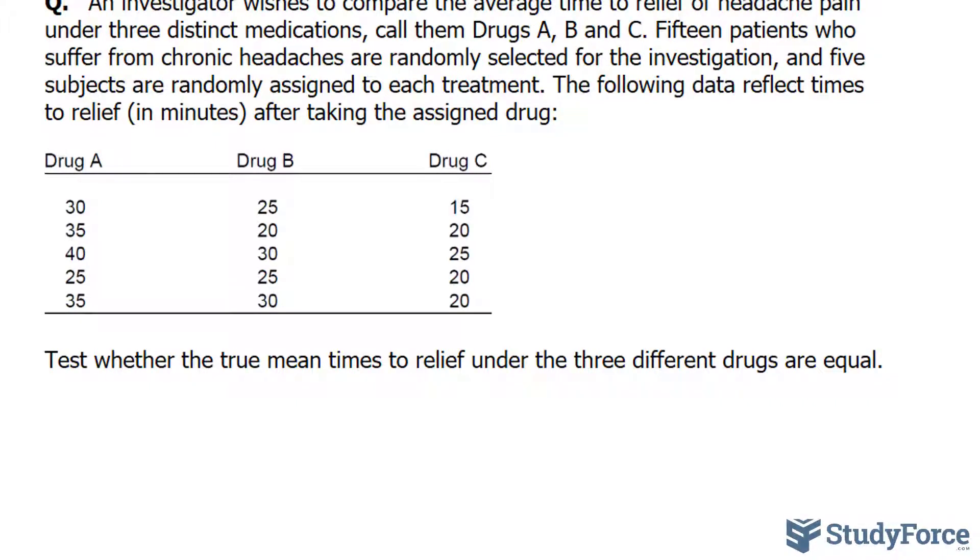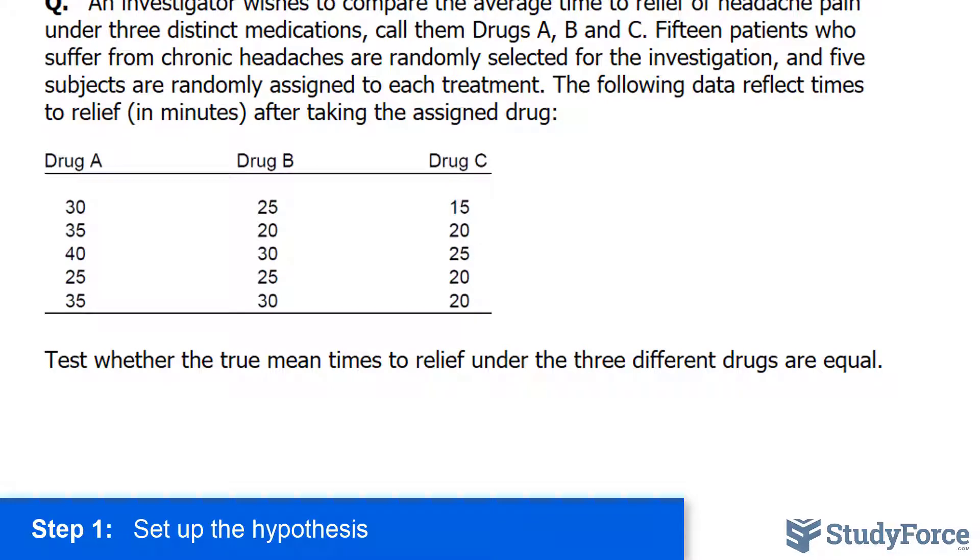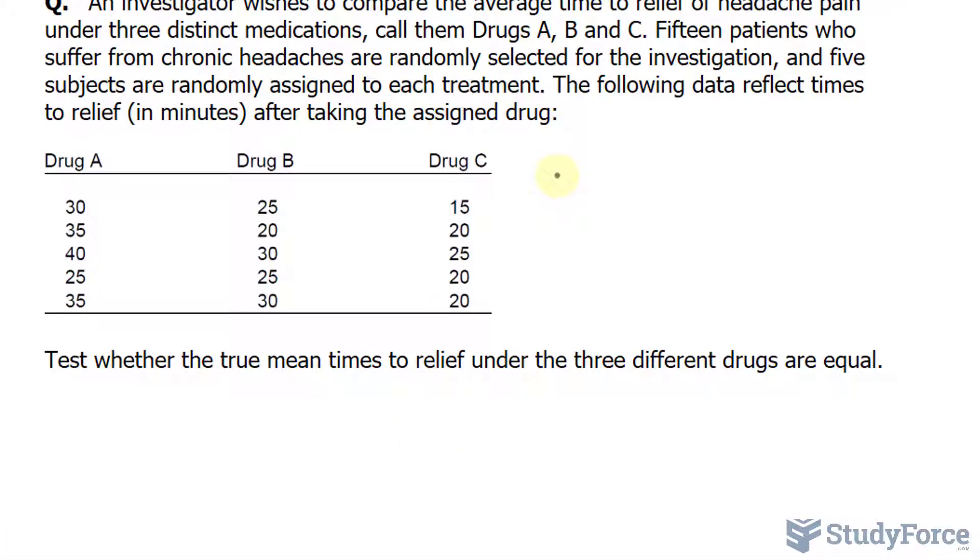To do these types of problems, we have to follow a systematic approach, and the very first step in this method is to set up the hypothesis. The null hypothesis, which I'll denote as H sub zero, is that all of the means are the same, so nothing really happened. I'll write down the mean of this sample as mu one is equal to mu two is equal to mu three.